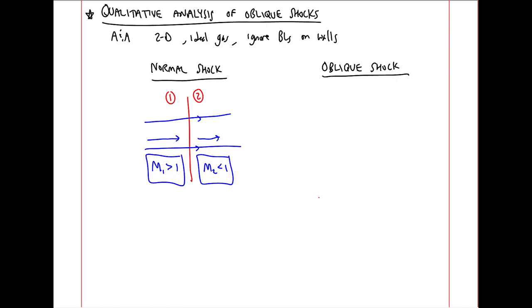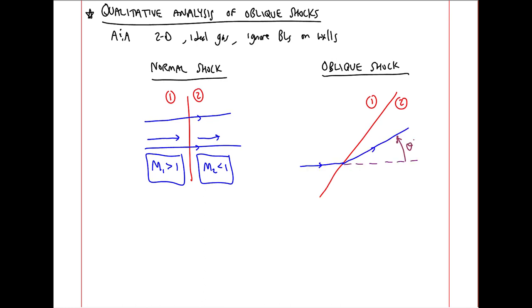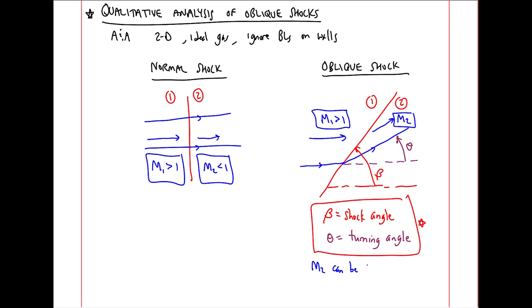When we have an oblique shock, we still have 1 in front and 2 behind the shock. But the streamlines actually turn at angle theta from the horizontal. The shock itself is at some angle beta. Beta is called the shock angle. And theta is the turning angle. M1 still has to be bigger than 1. You can get shocks only in supersonic flow. But M2 can be less than 1 or greater than 1, depending on M1, beta, and theta.